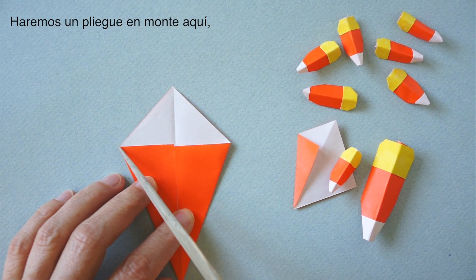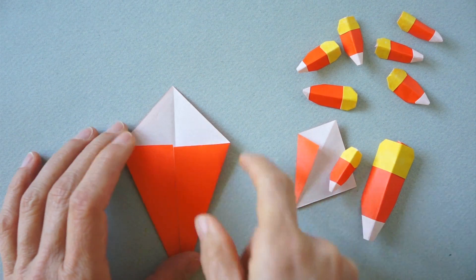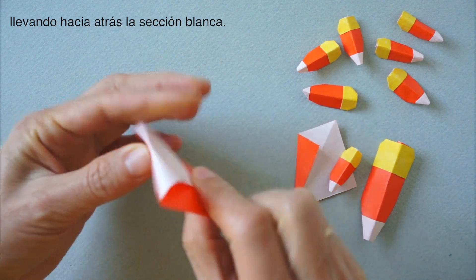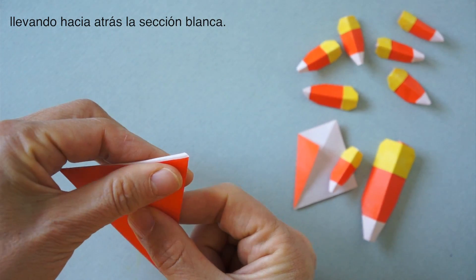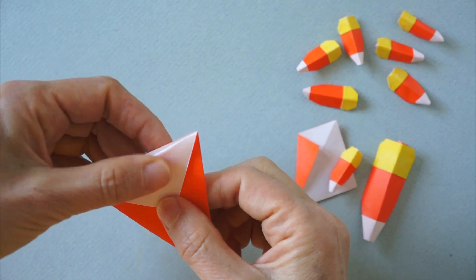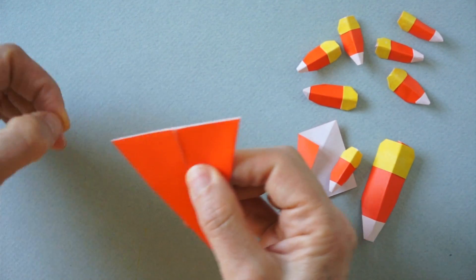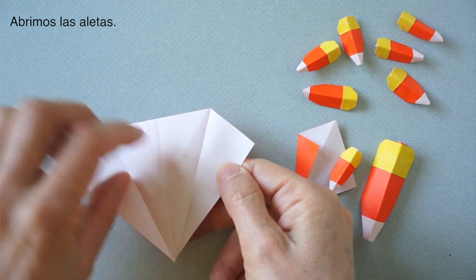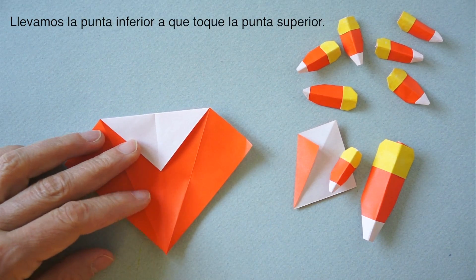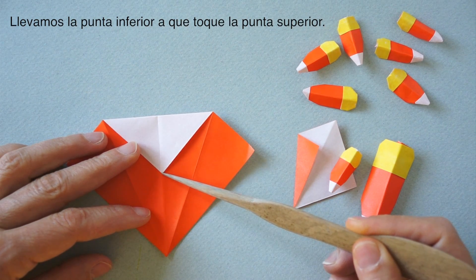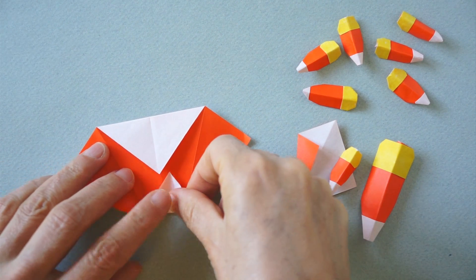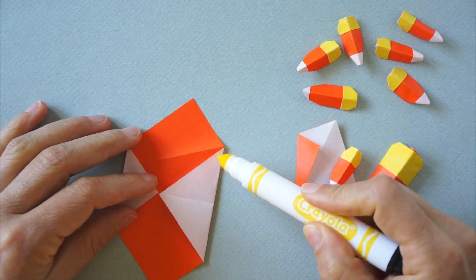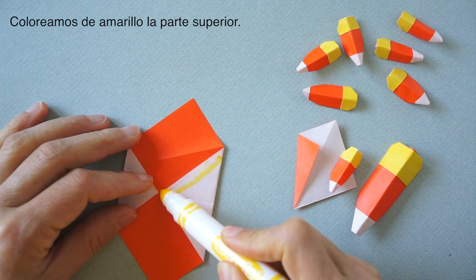Now we will make a fold along here. It will be a mountain fold. So we bring this white part to the back. Open the flaps, turn over, and the lower corner will meet this point. Now we are going to color this upper area with yellow.